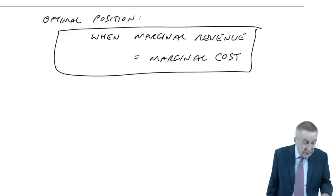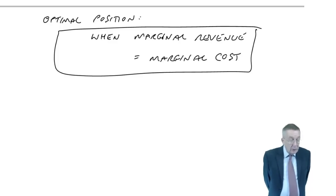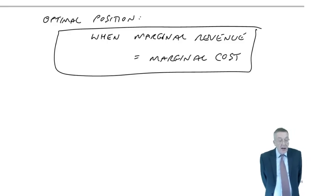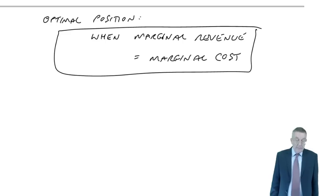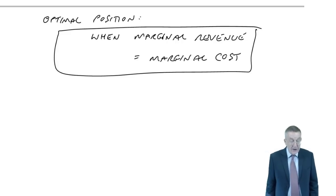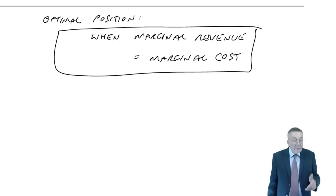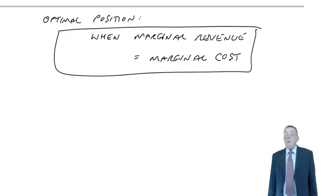Now let's look at a full example. Look at Example 5. A company currently has demand for its products of 2,000 units at a selling price of $30 per unit. It's been determined that a reduction in selling price of one dollar will mean extra sales of 100 units. The costs of production are $1,000 fixed costs together with a variable cost of $20 per unit. Calculate the selling price at which profit will be maximised.